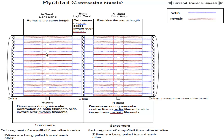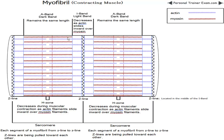The H zone is going to decrease during muscular contraction as actin filaments slide inward over myosin filaments. Since the actin is coming in and the Z lines are attached to the actin, the I band is also going to decrease in a contracting muscle. The myosin filaments — the red lines — stay the same length and are not moving. The only filaments moving in a contracting muscle are the actin filaments, so the A band, the dark band, remains the same length and does not change.